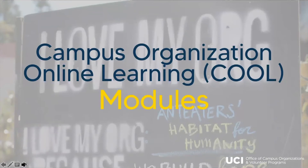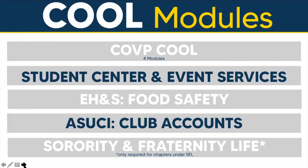Campus Organization Online Learning (COOL) modules are short videos that provide information on important policies, procedures, and resources from various departments that campus organizations utilize throughout the year. The Campus Organizations and Volunteer Programs COOL module provides additional information on RCO benefits, risk and liability, university policies, and campus resources. The Student Center and Event Services COOL provides organization leaders with information about booking meetings and events, as well as tools to plan safe and successful events.